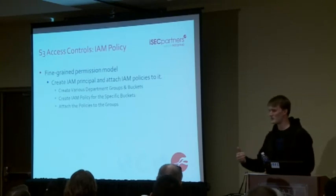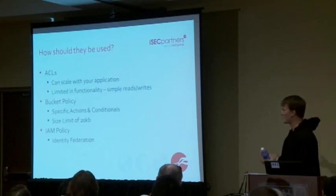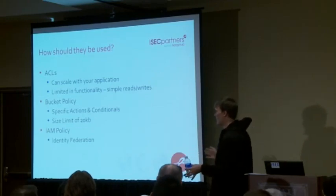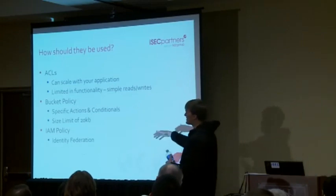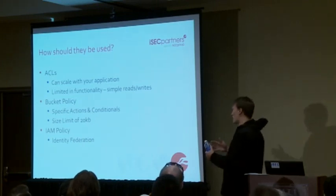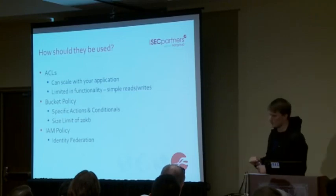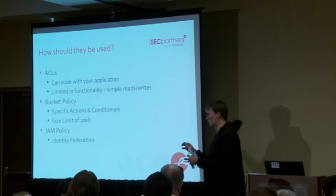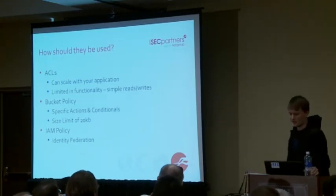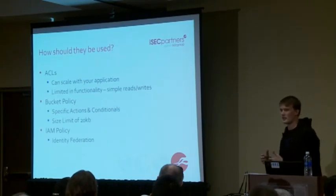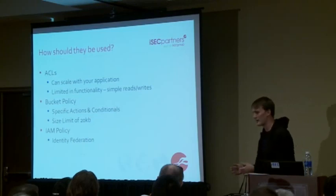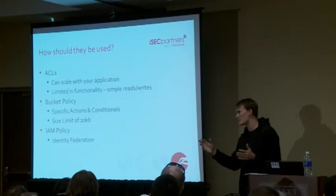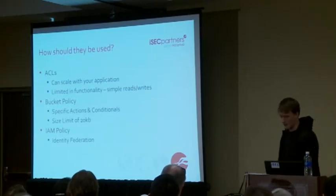Tying it all together: ACLs scale very well - you can use them for hundreds of thousands of objects within a bucket. Bucket policies have a limit of 20 kilobytes, so you can't use them at massive scale like ACLs. ACLs also have limited functionality - only simple reads and writes - whereas bucket policies let you specify exact enforcement details. I find bucket policies are great for incorporating more defense in depth: you can enforce HTTPS, satisfy HIPAA compliance, or ensure everything on your S3 environment is encrypted with server-side encryption. The IAM policy allows identity federation.